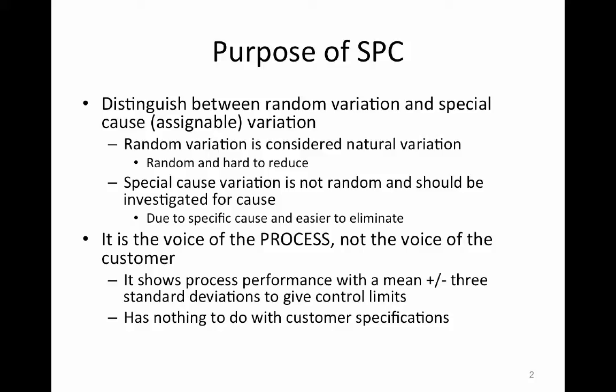What you're trying to do is distinguish between random variation and this special cause or assignable variation. Random variation is kind of the natural variation in the process. It's always going to occur and it's really hard to reduce this type of variation. Whereas the special cause variation, it's not random. You can assign some specific cause to it and then ultimately eliminate it.